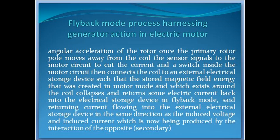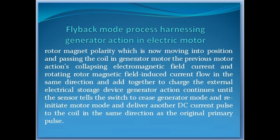Once the primary rotor pole moves away from the coil, the sensor signals to the motor circuit to cut the current, and a switch inside the motor circuit then connects the coil to an external electrical storage device such that the stored magnetic field energy that was created in motor mode and which exists around the coil collapses and returns some electric current back into the electrical storage device in flyback mode. Said returning current flows into the external electrical storage device in the same direction as the induced voltage and induced current which is now being produced by the interaction of the opposite secondary rotor magnet polarity, which is now moving into position and passing the coil in generator mode. The previous motor action's collapsing electromagnetic field current and rotating rotor magnetic field induced current flow in the same direction and add together to charge the external electrical storage device. Generator action continues until the sensor tells the switch to cease generator mode.